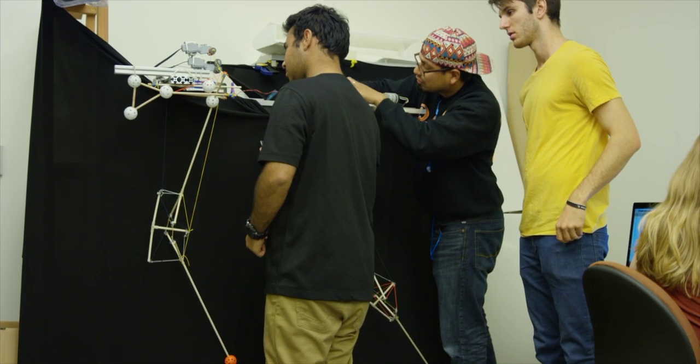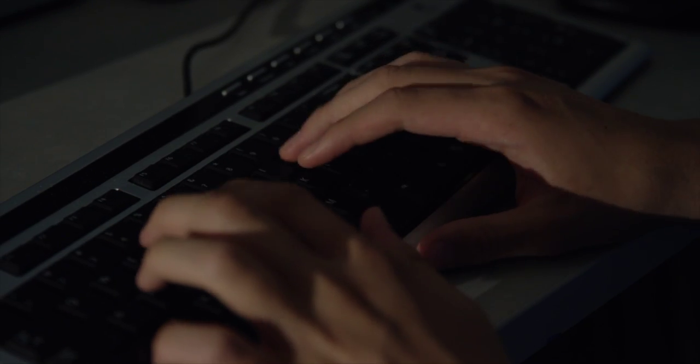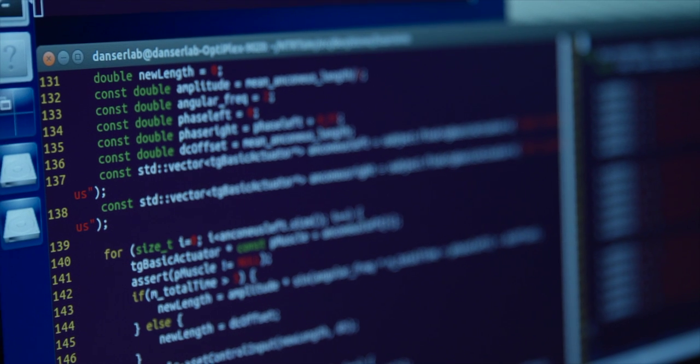Obviously, the realm of bio-inspired design is enormous, and so we here at the Dancer lab at UCSC want to figure out specifically some human applications that would benefit from this type of technology. I personally have been looking into upper limb extremity applications, so that's arms and hands and elbows and all the joints associated with that.